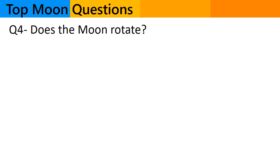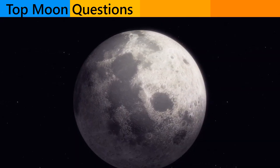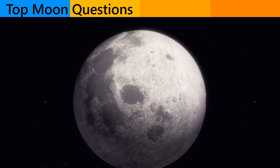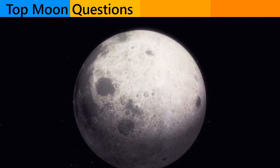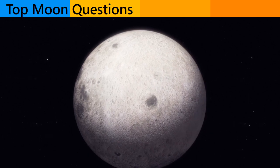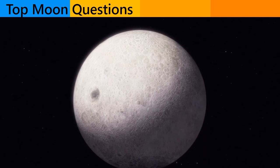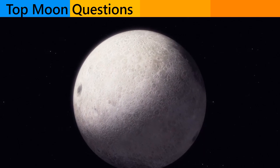Question number 4. Does the moon rotate? Yes, the moon does rotate but its rotation is synchronized with its orbit around the earth. This means that the moon takes about the same amount of time to rotate once on its axis as it takes to complete one orbit around the earth, approximately 27.3 days.